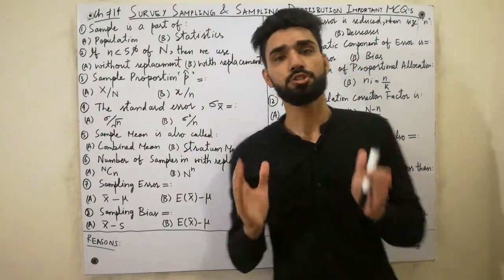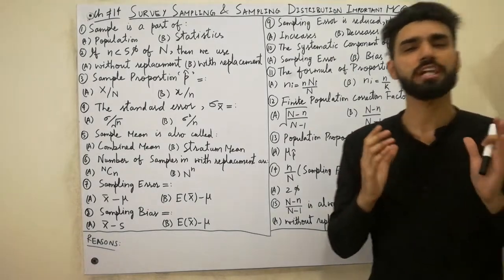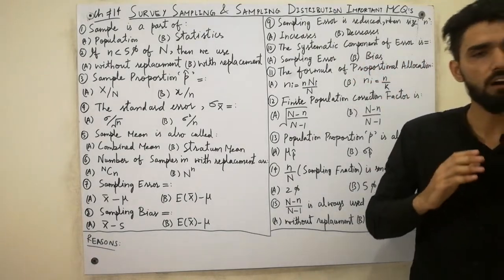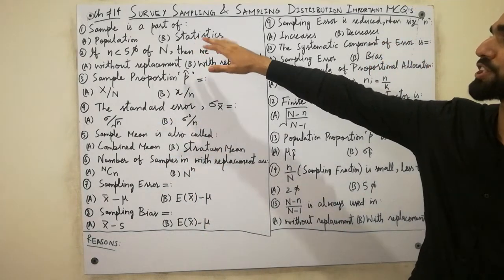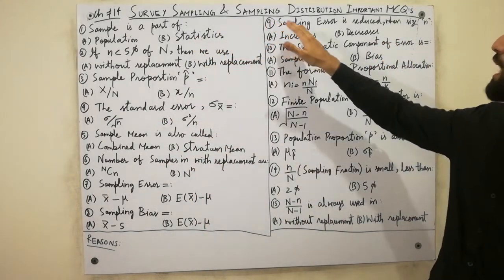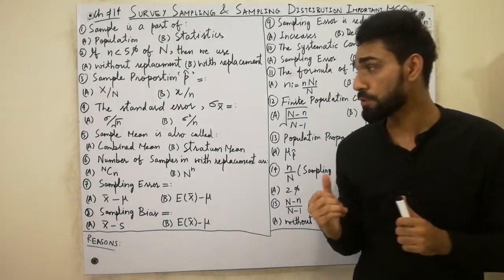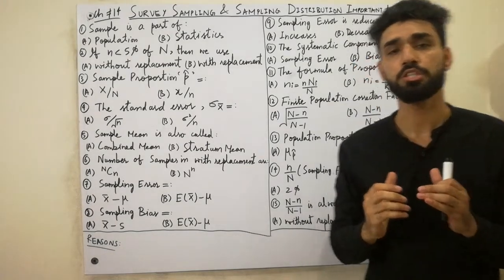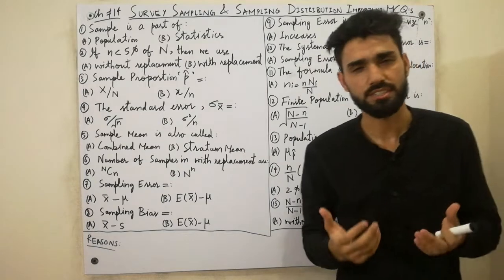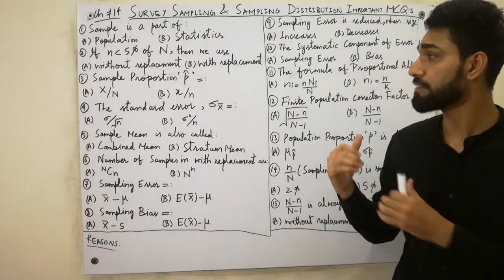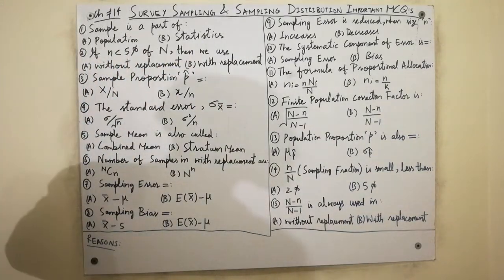Assalamu alaikum dear friends, today I am here to explain the most important MCQs which are repeated across all universities. That's Chapter 14: Survey Sampling and Sampling Distribution from the book by Sher Mohammad Chaudhary. These problems are very important for you, so watch this video till the end if you want to gain more understanding.